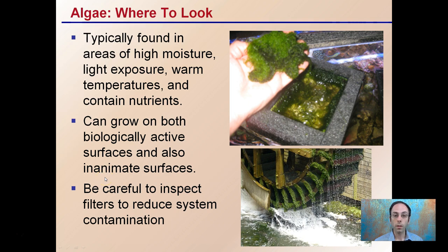Where to look specifically? It's typically found in areas with high moisture, with light exposure, warm temperatures, and some form of nutrients. It can grow on both biologically active surfaces as well as inanimate surfaces. Just because something is plastic, metal, or wood doesn't mean algae will not grow there — it can easily survive on the exterior surface of these materials.